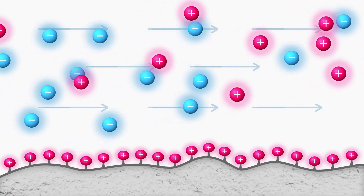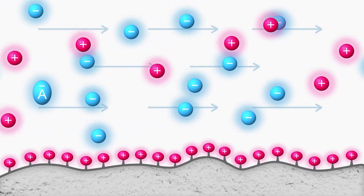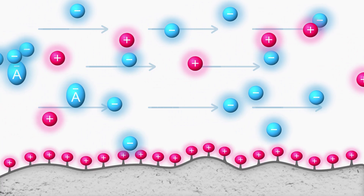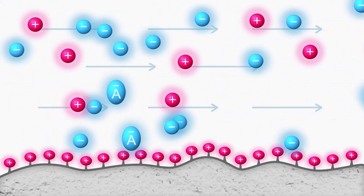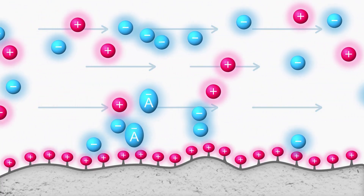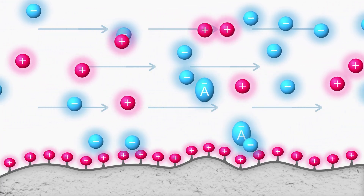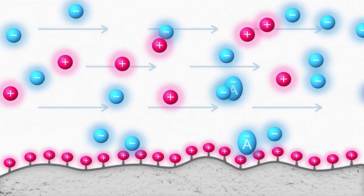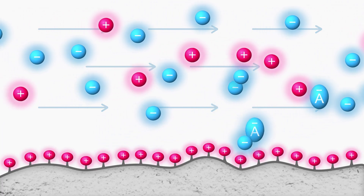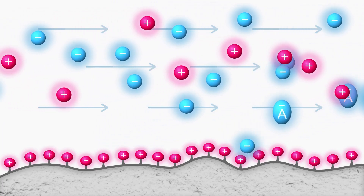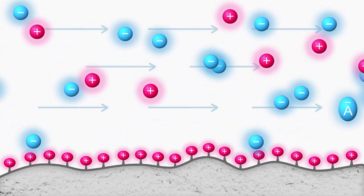Here we show a visualization of ion exchange separation. The surface has a net positive charge and retains the single charged negative ions. The glow around the ions represents the solvation layer that forms around the charged particles in this aqueous solution. This solvation layer minimizes interactions between the ions in solution.